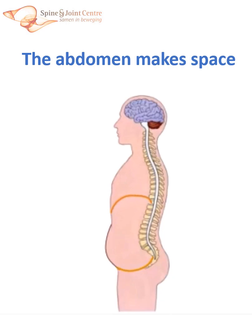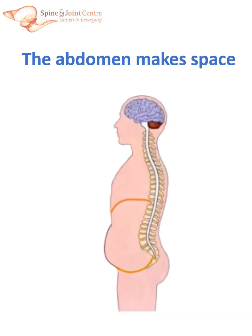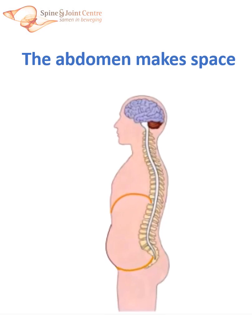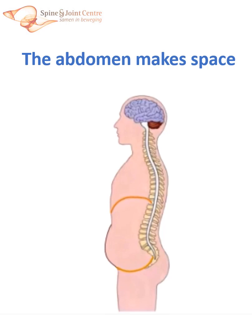And that is exactly what happens. At the same time when the diaphragm contracts and moves downward, the abdominal wall relaxes, causing the abdominal content to make space. This is what we call abdominal breathing. We don't actually suck air into our abdomen — we simply shift our abdominal content to make space for our diaphragm to come down.